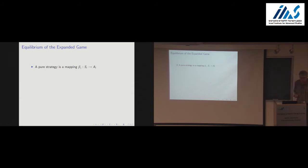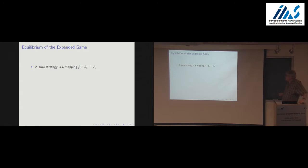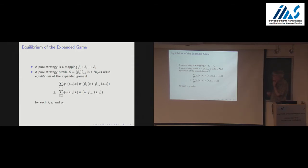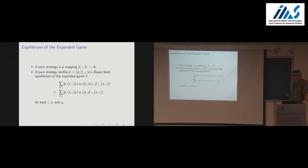We've constructed a game of incomplete information — a degenerate one, because players have observed these extra signals. In an incomplete information game, a strategy is now a function of your signals. The completely standard definition of Bayes-Nash equilibrium in the incomplete information game generated by this expansion is an interim definition: if you are player i of type s-i, following your equilibrium strategy gives you some expected utility given s-i under your prior belief over others' signals.